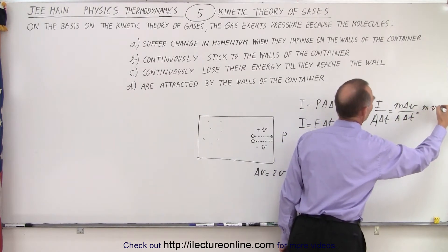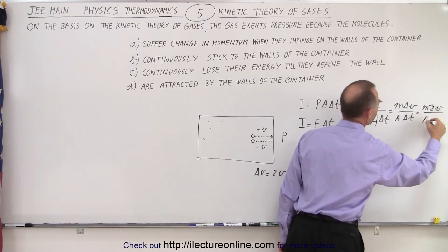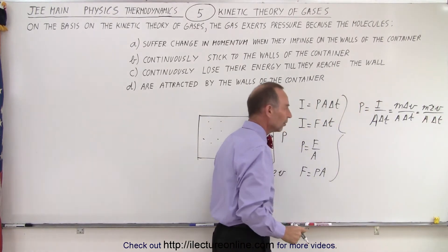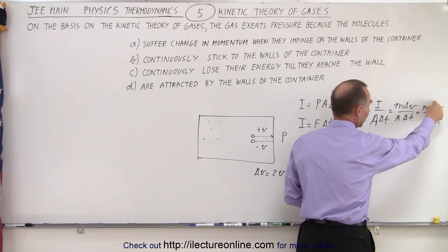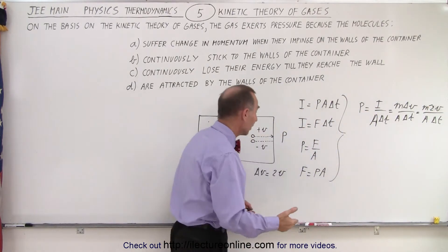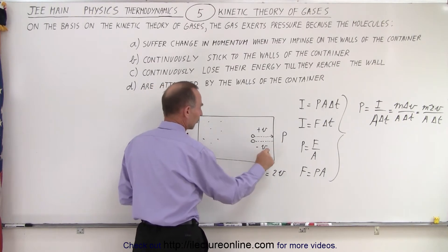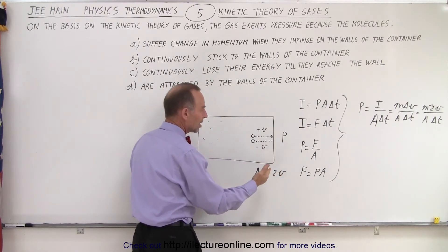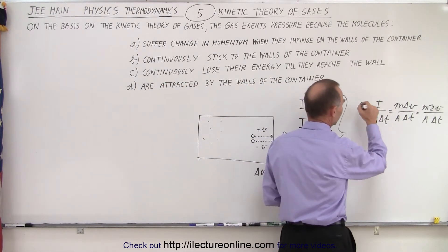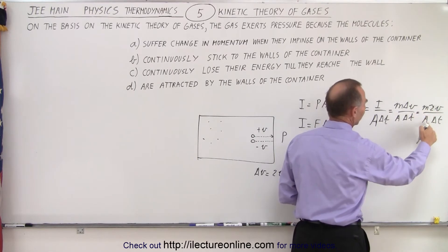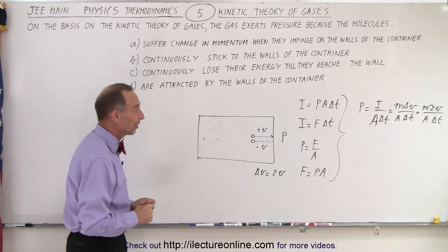That equals m times 2v, divided by area times delta t. What this means is that the pressure is created by the change in velocity, and then how often this occurs. On any one wall, the time between collisions — when it travels from here to here and back — that's your delta t. Once you know your velocity and the length of travel, you can find delta t. So pressure equals mass times twice the velocity, divided by area times the time to go from here to here and back. That's the kinetic theory of gases in a nutshell.